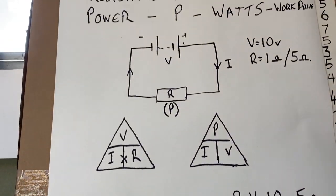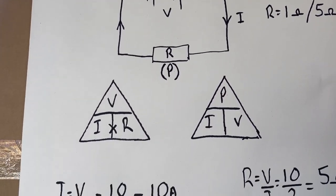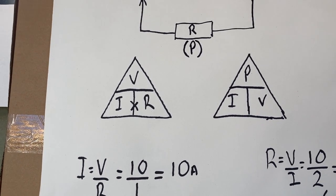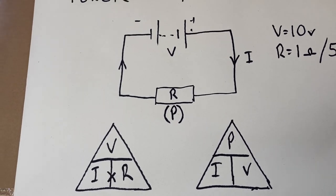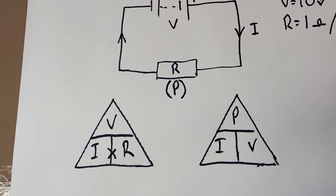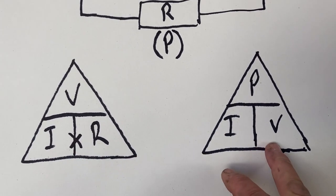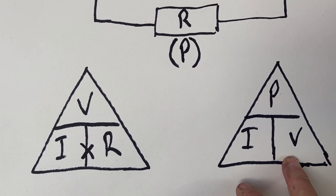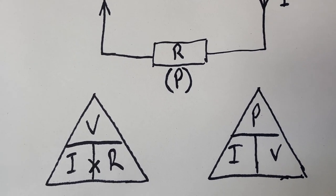Really, those two triangles — VIR and PIV — are your bread and butter when solving a circuit. They cover cable sizing, fusing, how much current a device draws, how long a battery will last with a certain load. We'll cover all that in future videos. Let's pick something from the real world.